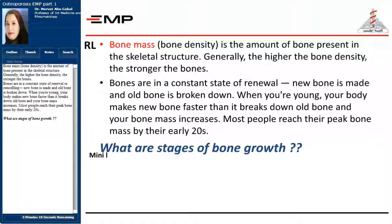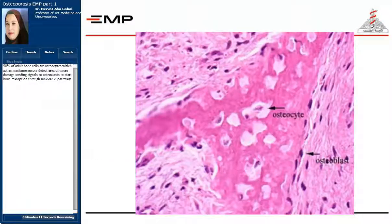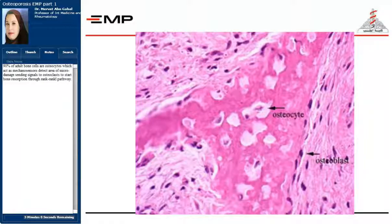What are the stages of bone growth? 90% of adult bone cells are osteocytes, which act as mechanosensors. They detect areas of micro-damage, sending signals to osteoclasts to start bone resorption through the RANK-RANKL pathway.